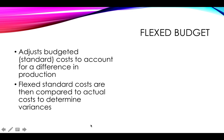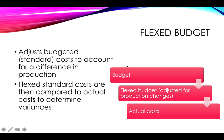When using a flexed budget, you start with your initial budget where you were just setting goals. Once you know how much you actually produced, you flex the budget: given that production differed from expected, what should the costs have been based on actual production? You then compare the flexed budget to actual costs, and the variances will be the differences between flexed standard costs and actual costs. This gives you a much more realistic set of variances to analyse and discuss.